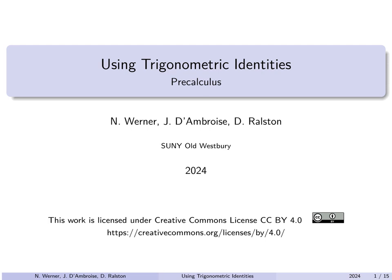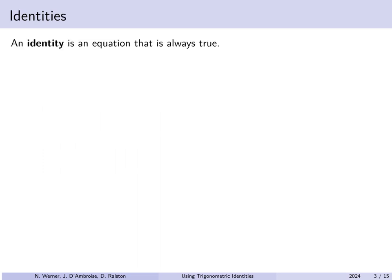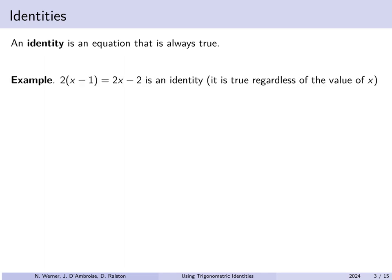In this video we're going to begin using trigonometric identities. Specifically we will introduce the sum and difference formulas for sine, cosine, and tangent, as well as double angle and half angle identities for sine and cosine. An identity is an equation that is always true as long as everything involved is defined. For example, two times x minus 1 equals 2x minus 2 is an identity — it is always true regardless of the value of x.